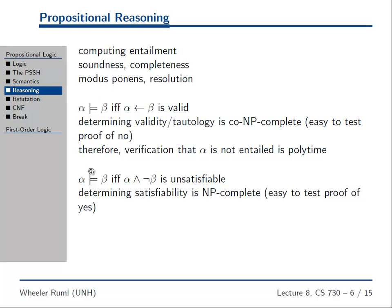This is entailment: we have alpha entails beta if and only if the formula alpha and not-beta is unsatisfiable. I just want to explain what this means, so let's do an example.